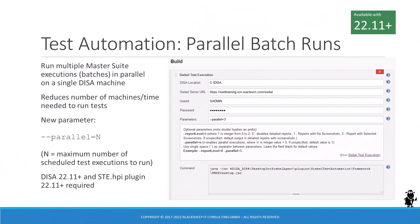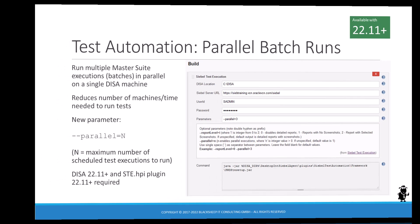Siebel test automation was greatly enhanced with the inauguration of Innovation Pack 2017 and received various updates over the past five years. With 22.11, Oracle adds two new features. The ability to run multiple test executions in parallel on a single DESA client has a major impact on the number of machines and time required for batch testing. The Siebel test execution plugin for Jenkins and DESA now supports a new parameter to specify the number of scheduled test execution records to fetch and execute.